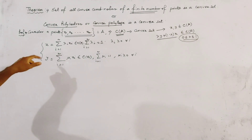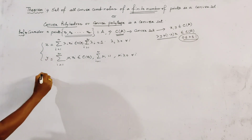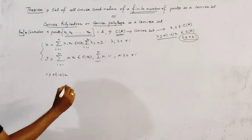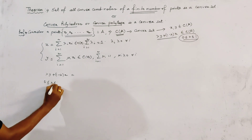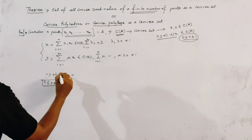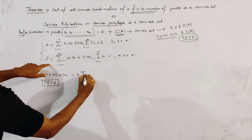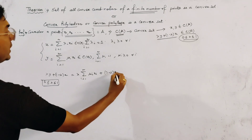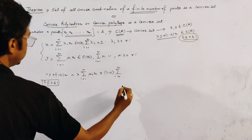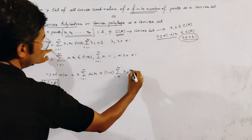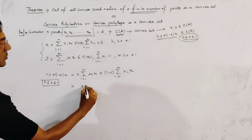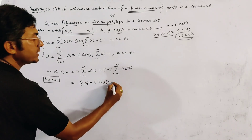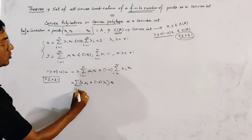Now we make the convex combination of x and y, which we already wrote as λy + (1 − λ)x, with 0 ≤ λ ≤ 1. Substituting the values, this equals λ · summation i = 1 to n of μᵢ xᵢ, plus (1 − λ) · summation i = 1 to n of λᵢ xᵢ. We can write the result as summation i = 1 to n of (λμᵢ + (1 − λ)λᵢ) xᵢ. Let γᵢ = λμᵢ + (1 − λ)λᵢ.